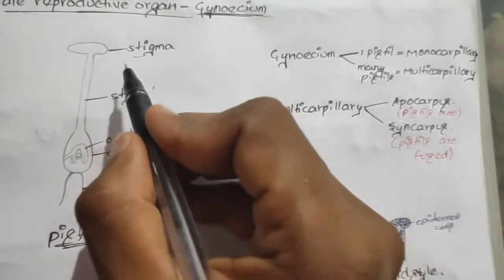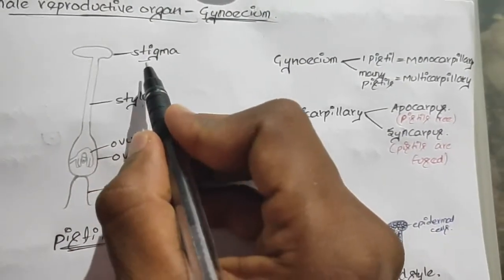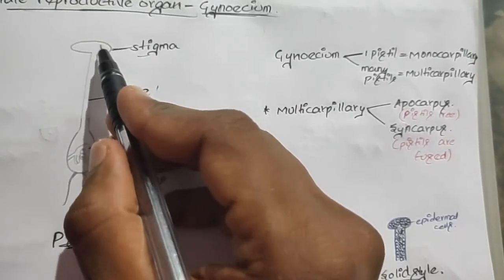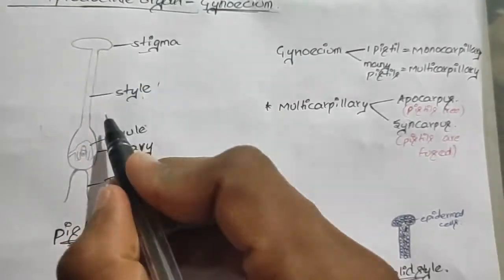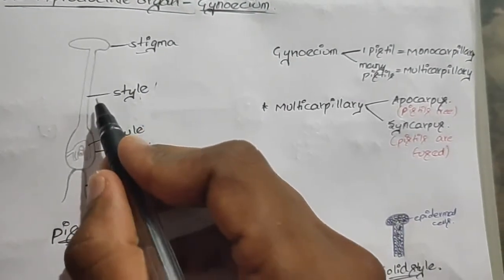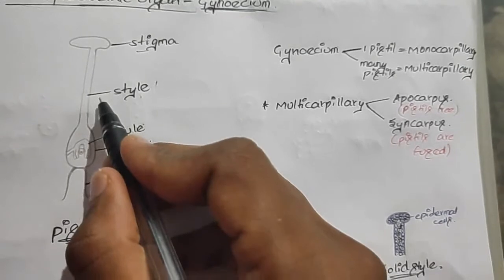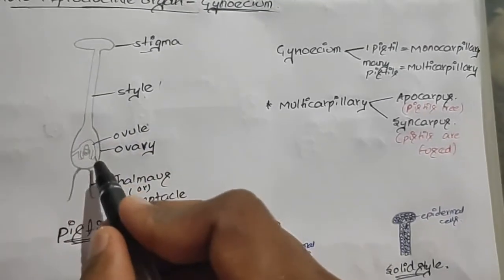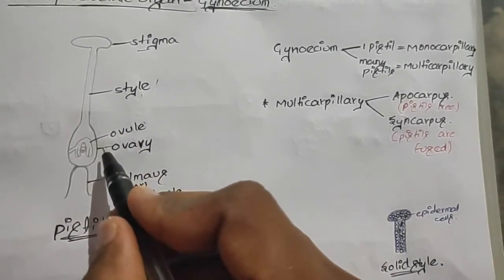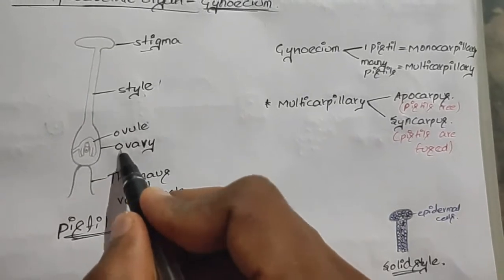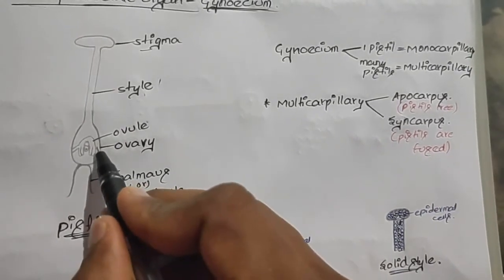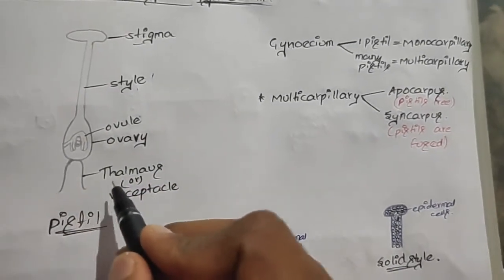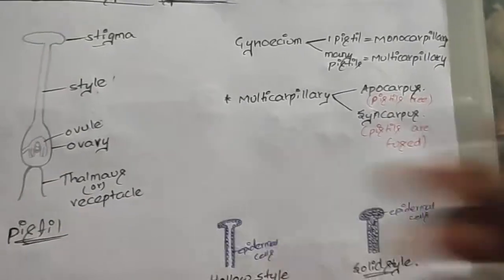The upper head-like or swollen part is known as the stigma, and this is the place where the male reproductive organ pollen falls. Below the stigma is a long, slender, stalk-like structure known as the style. Below the style is the swollen region known as the ovary, and this ovary is attached to the thalamus or receptacle.